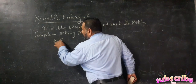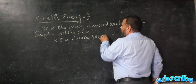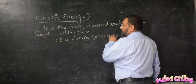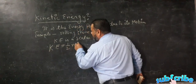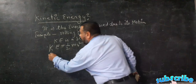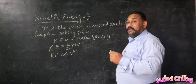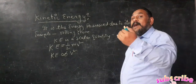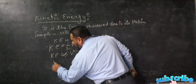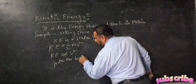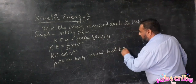Kinetic Energy is a scalar quantity. Kinetic Energy is equal to K = ½mv². Kinetic Energy is directly proportional to the square of the speed. If the body is running fast, then it possesses more kinetic energy. Faster the body, more will be its kinetic energy.